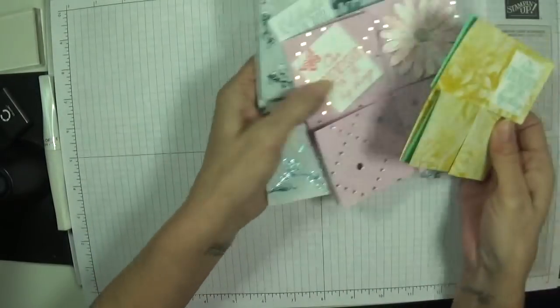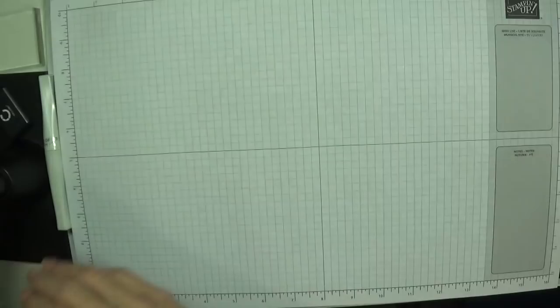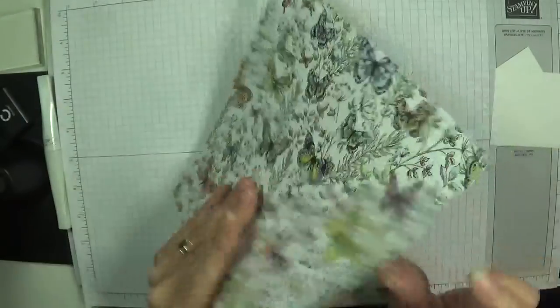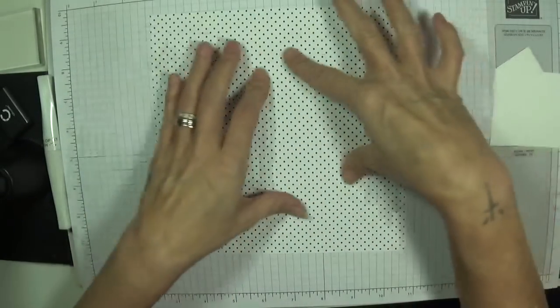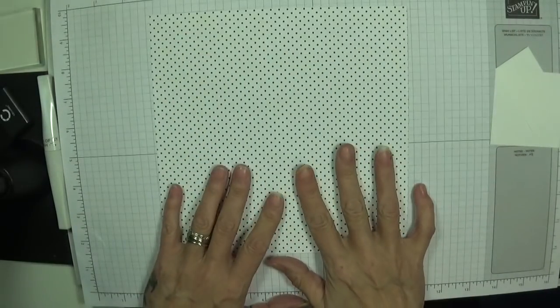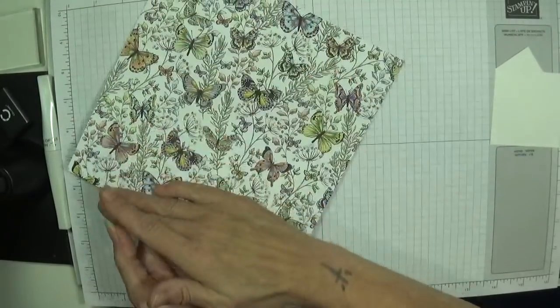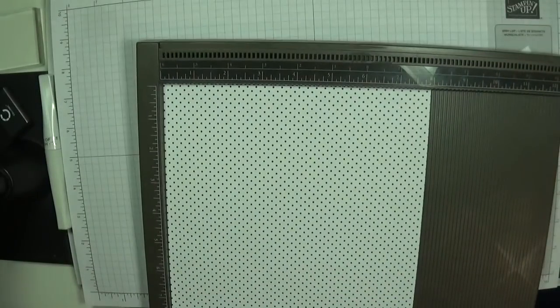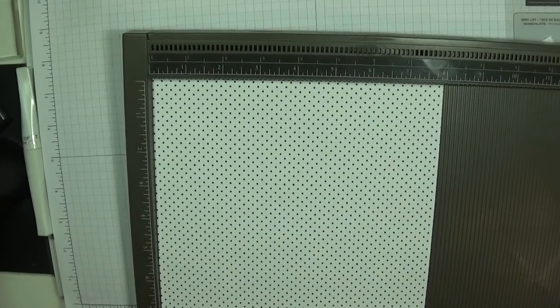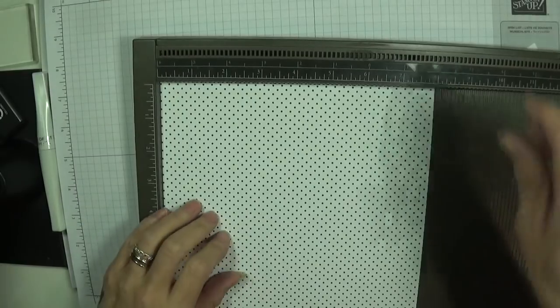This is using Stampin' Up products. These were just using my normal papers just for practice. So I'll show you how I made it. It's so simple. You're going to need a piece of designer series paper. You can do this with card stock as well. I do find it's a little bit harder to see the crease lines. But whatever you want to show on the outside and on the inside, face down. And you're going to grab your scoreboard.